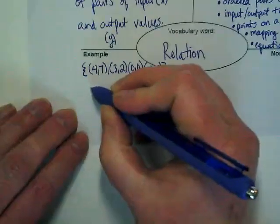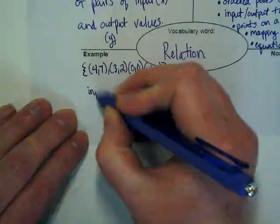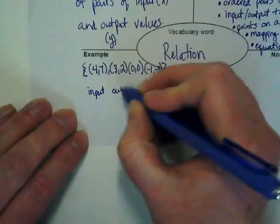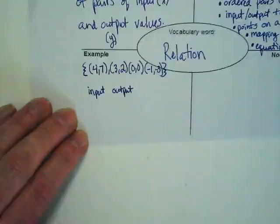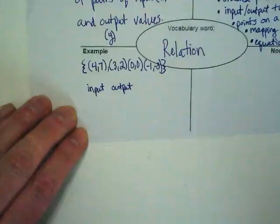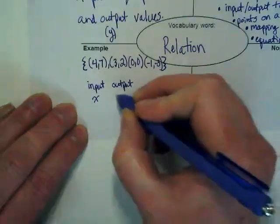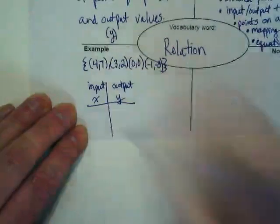Here's an input-output table. I usually don't write the words input-output when I'm doing this. I usually just put X and Y and make my table.